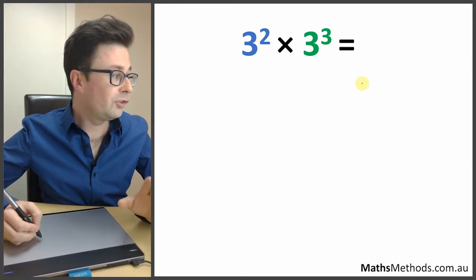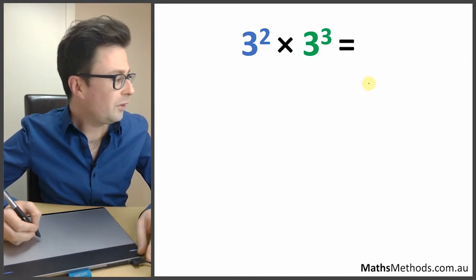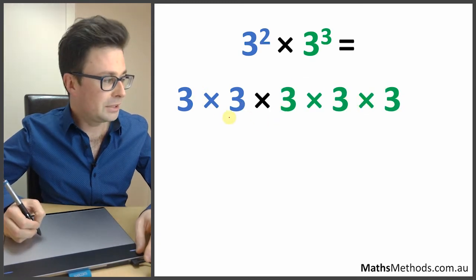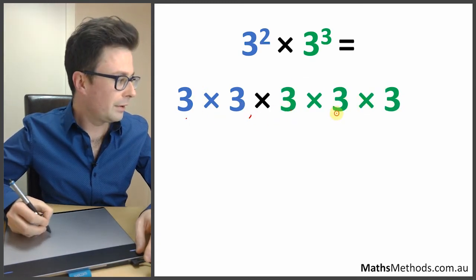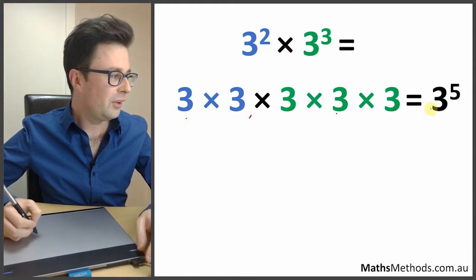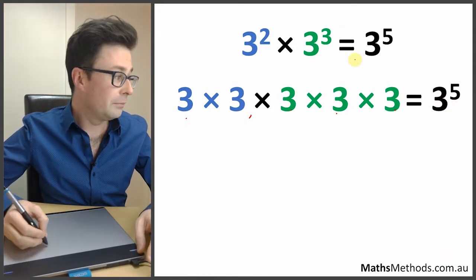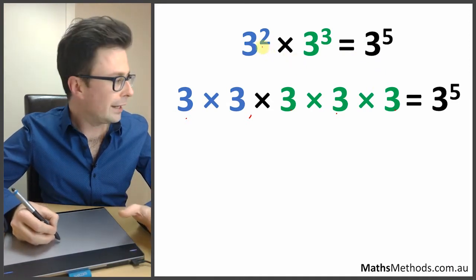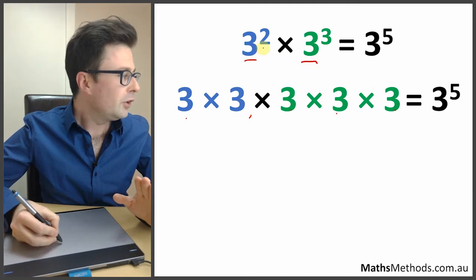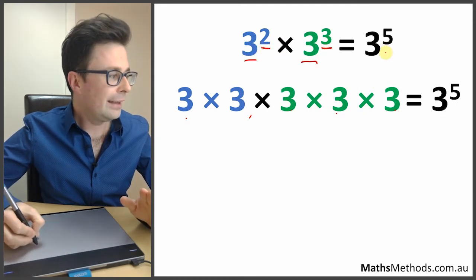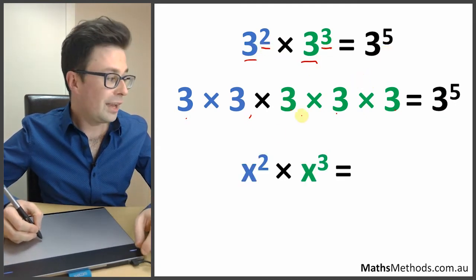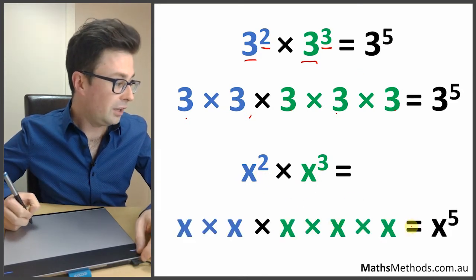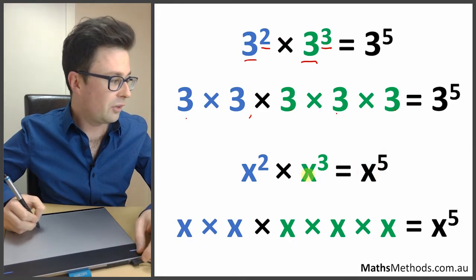If you've got 3 to the power of 2 times 3 to the power of 3, that means we've got 2 threes multiplied by each other, then 3 threes multiplied by each other — so we've got 5 threes in total, which is 3 to the power of 5. The trick is: when the bases are the same, you just add the powers together. This works the same with x's — x to the power of 2 times x to the power of 3 gives x to the power of 5.